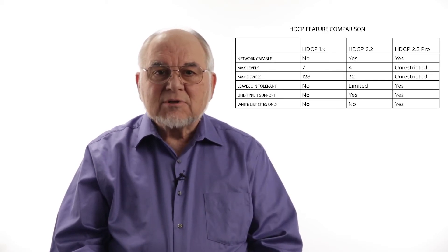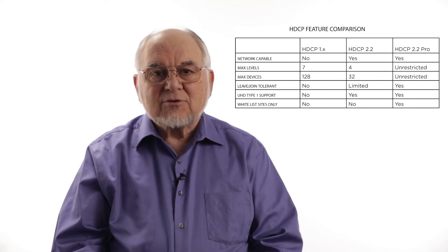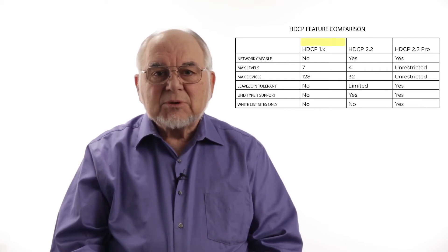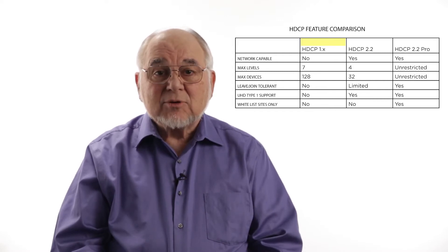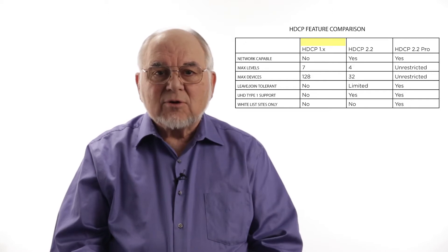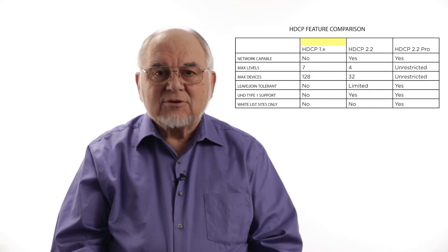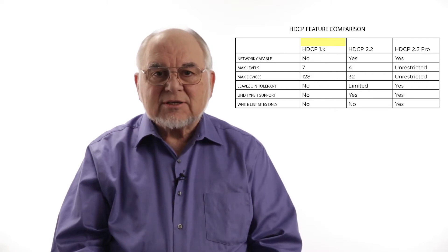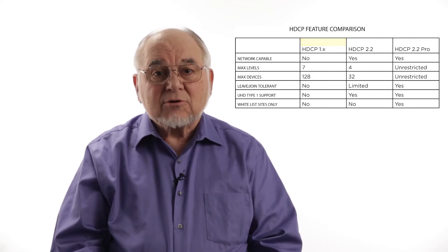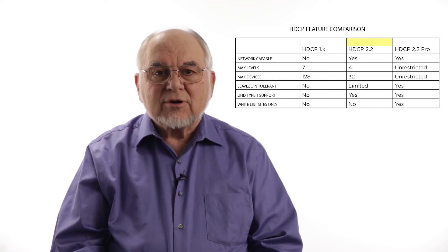We have a chart showing some of the feature contrast and compare on these. You'll notice that HDCP 1.x has a fan-out capability of up to 128 devices, but is not appropriate for network devices and cannot be used for high-value content, such as the Type 1 content that studios are using for UHD theatrical releases.